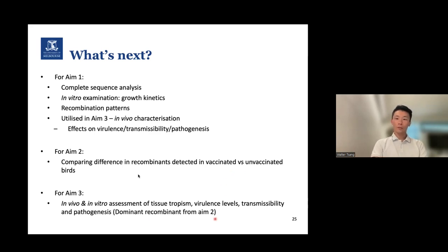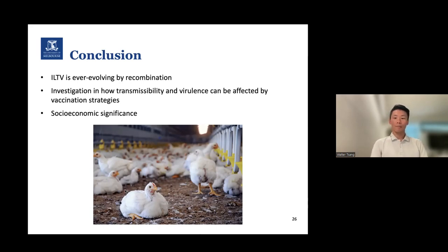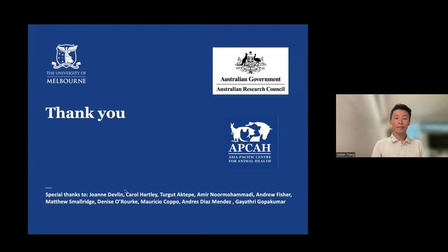In conclusion, ILTV is ever-evolving through recombination. Investigation into how transmissibility and virulence can be affected by vaccination strategies is very important in controlling the disease, and has a significant socioeconomic impact. Thank you to my supervisors Jo, Carol, Turgut, and Amir, my chair Andrew, and special thanks to Matthew, Denise, Mauricio, Andreas, and Gaia for their help along the way.